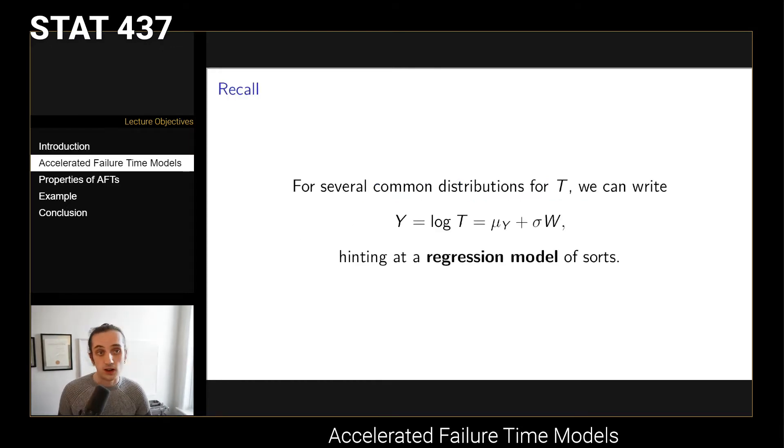As we saw for several common distributions for the survival time T, if we take the log transform of T, we end up in this location scale form for the model. We can view this as a regression model where this mu parameter is the mean and that's what we really care about. Then we're left with this sigma W term, which we can think about as an error distribution. This gives rise to what we will call an accelerated failure time model.